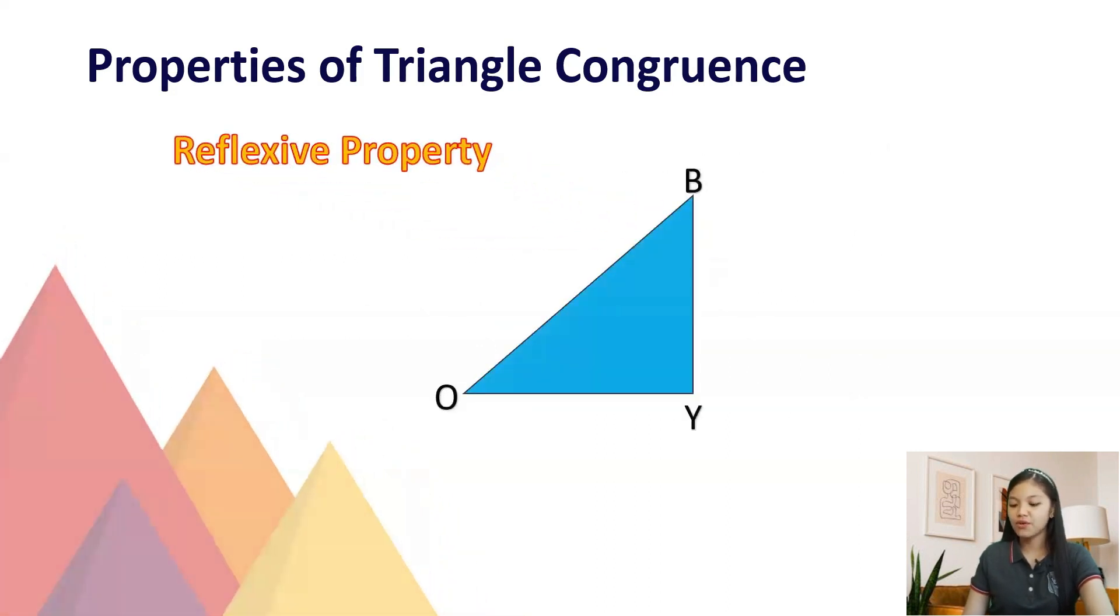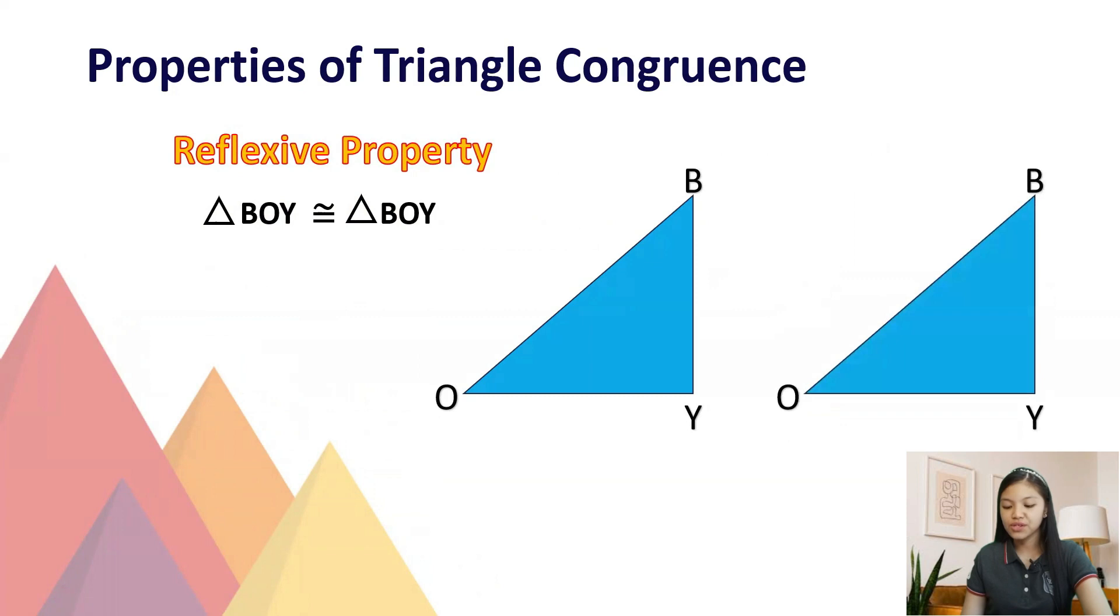First is the reflexive property. Triangle boy is congruent to triangle boy. It shows that a triangle is congruent to itself.